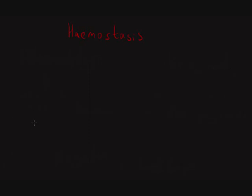Haemostasis basically refers to the body's ability to prevent blood loss. It's often a topic that people find fairly difficult to understand and quite confusing. What I want to do is, right at the start, go over two important principles that I think have certainly helped me understand the ideas behind haemostasis.